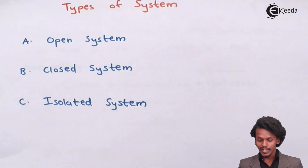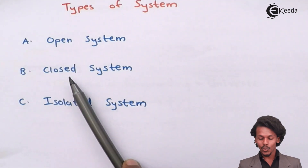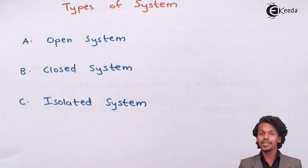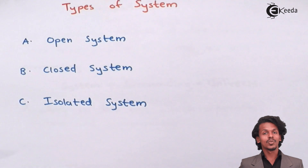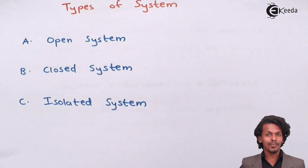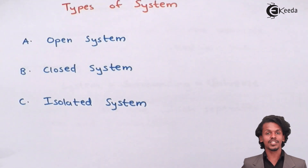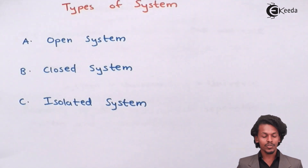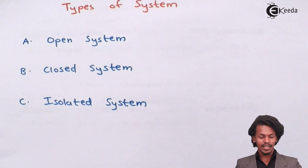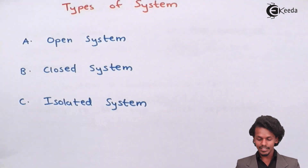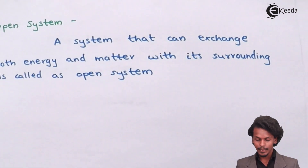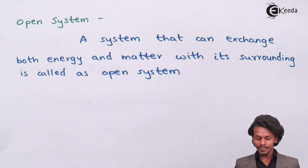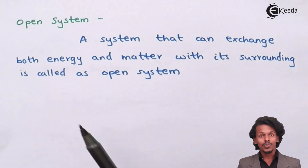Talking about the types of system, there are basically three types: one is open system, the second is closed system, and the third is isolated system. Let us talk about each system in detail.